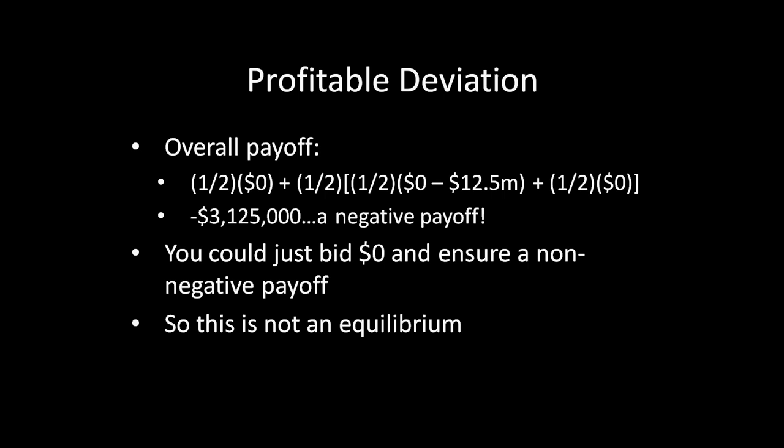You can see why there's a profitable deviation. If you're the low type, you can simply bid nothing — you don't care, you bid nothing for this oil field. If you do that, you make it literally impossible to get a negative payoff. That's better than following the strategy of bidding $12.5 million having received the low signal. So you have a profitable deviation, and that deviation is to simply bid nothing whatsoever.